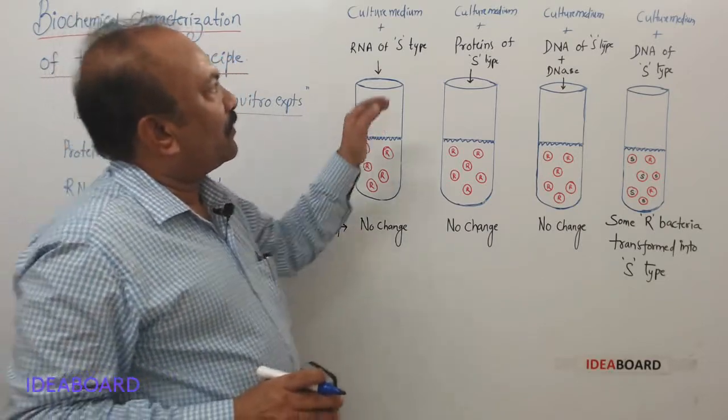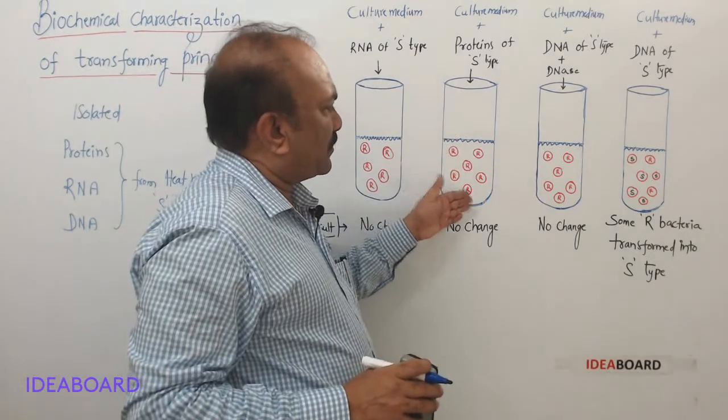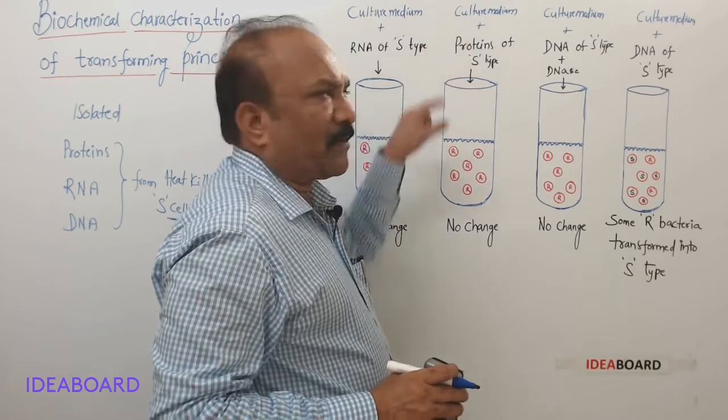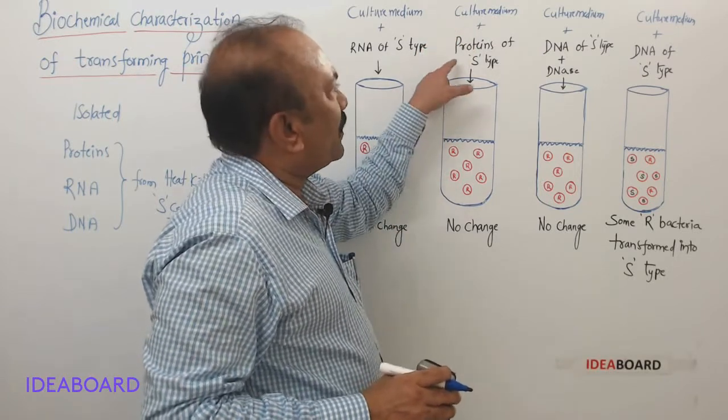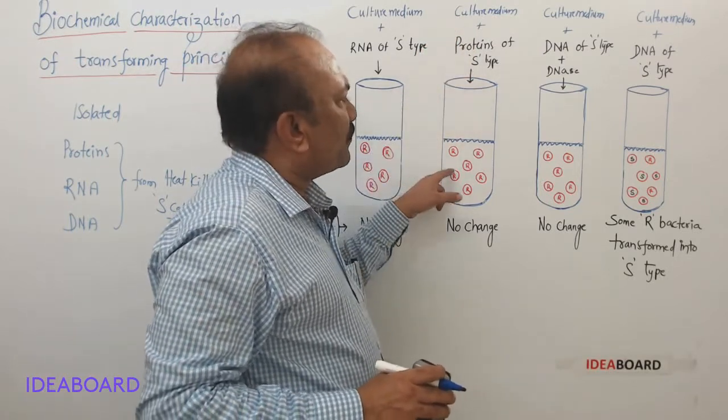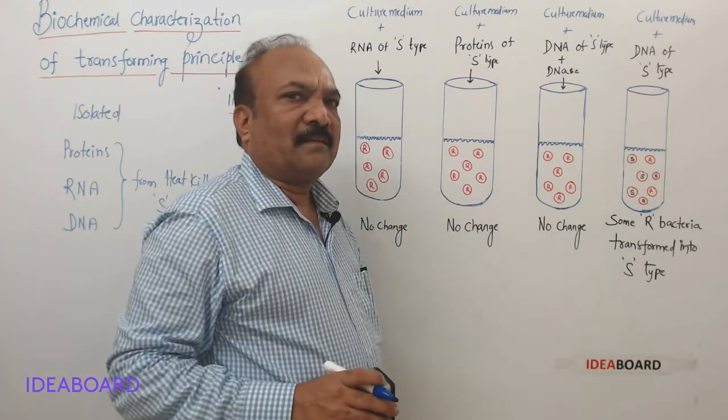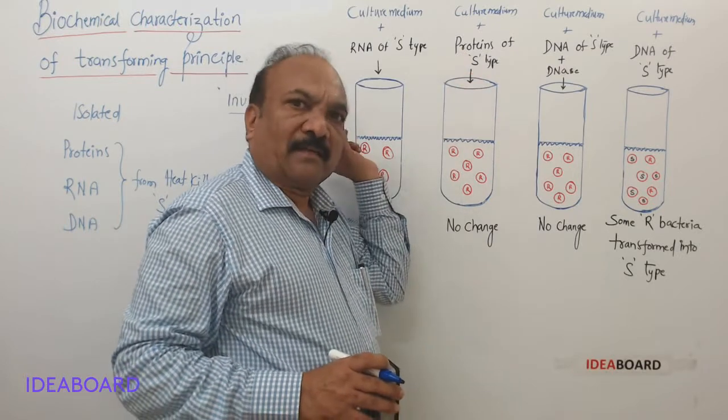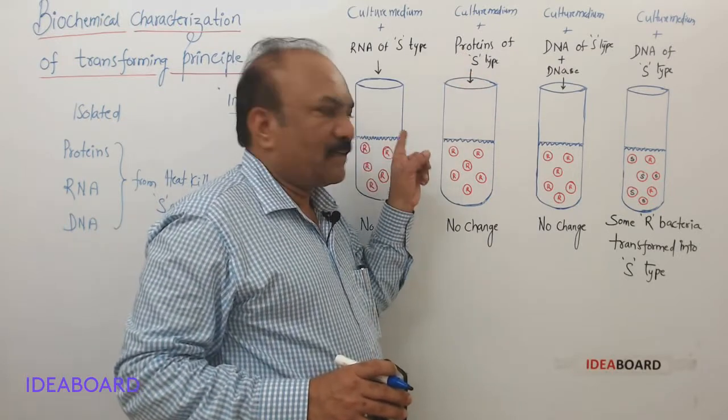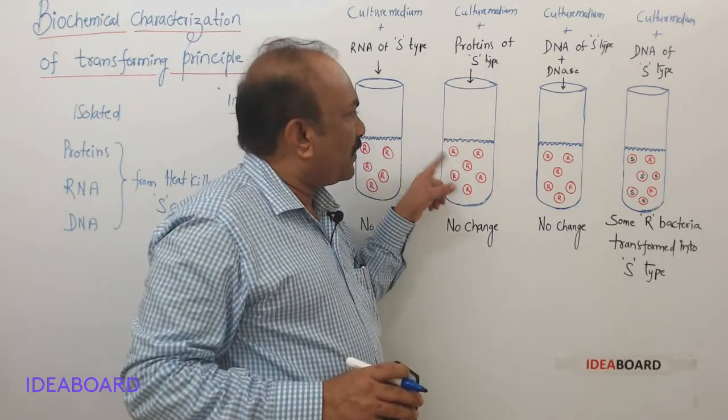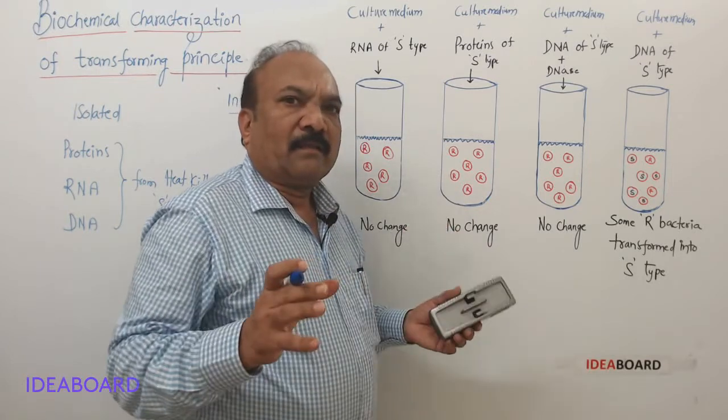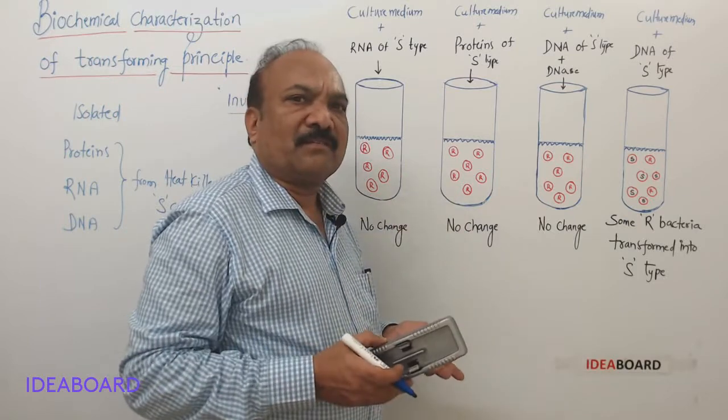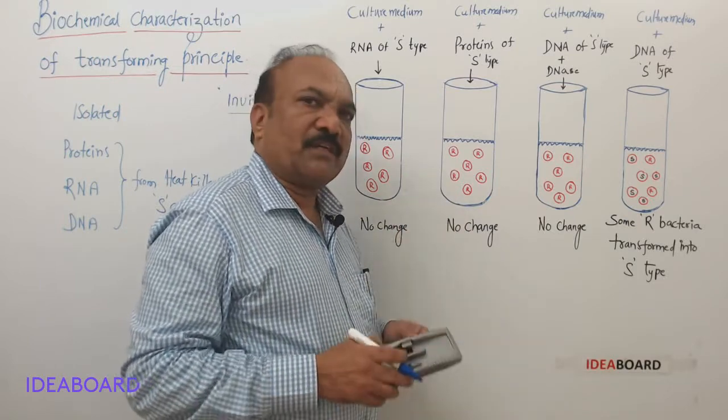Now in the next one, in the culture medium they have added proteins of S type along with these R cells. Proteins of that heat-killed S cells is added. And now they want to see whether these R cells changed or not. R cells remained as it is. There was no change.